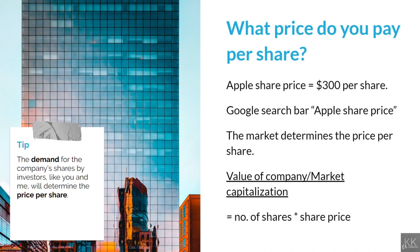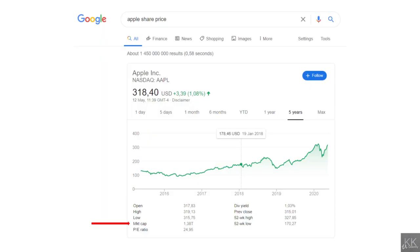Now that you know these concepts, there's one more thing I want to touch on. How can we calculate what the whole of Apple is worth? Quite simply, we take the share price and multiply it by the number of shares which have currently been issued by the company. The number of shares can be found in the income statement, but we will get there later. Right now, if you want to find what the entire company is worth, you can quickly find this value by searching for the company's share price on the internet.